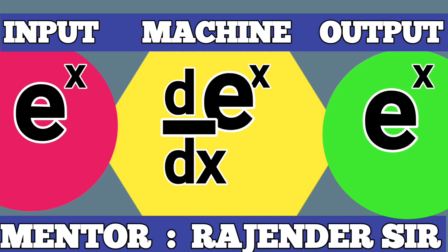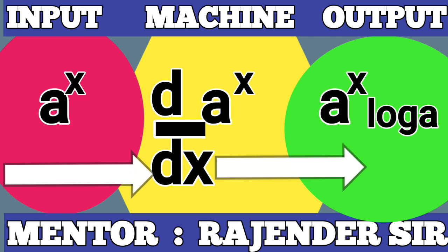Now let us go to the second formula. Where the input is a raised to x, it goes into the machine, it becomes d dx of a raised to x. Then the output comes a raised to x log a.